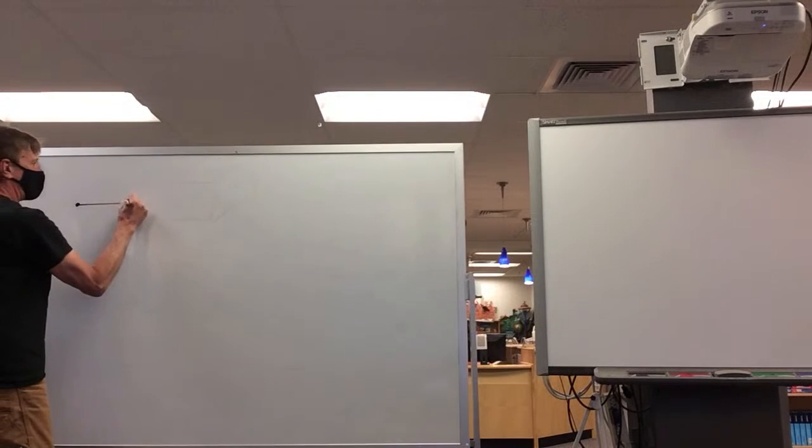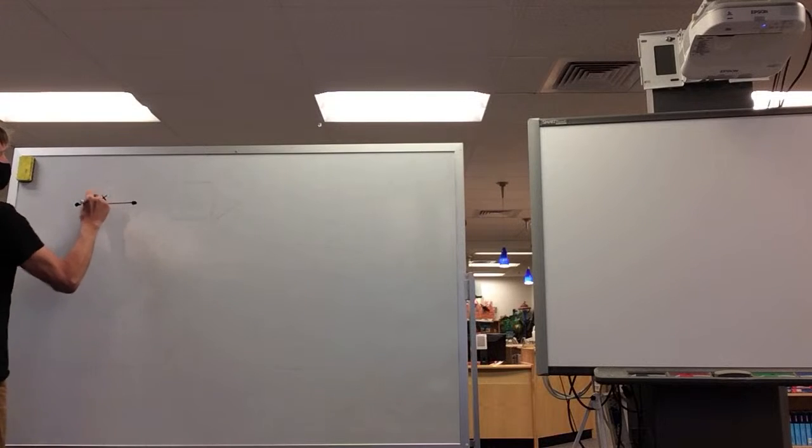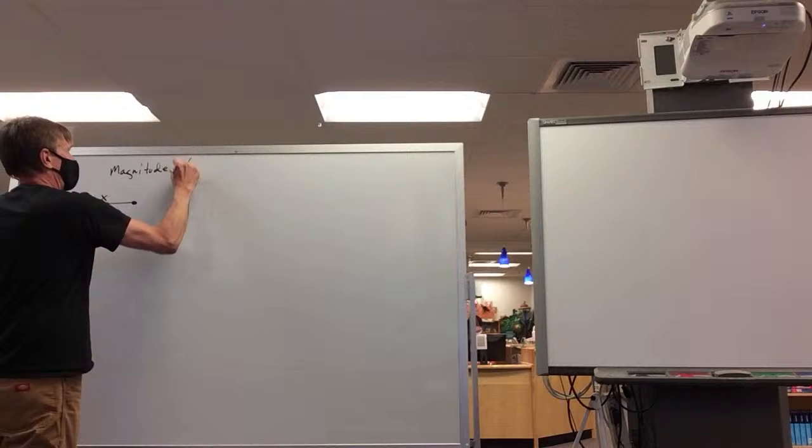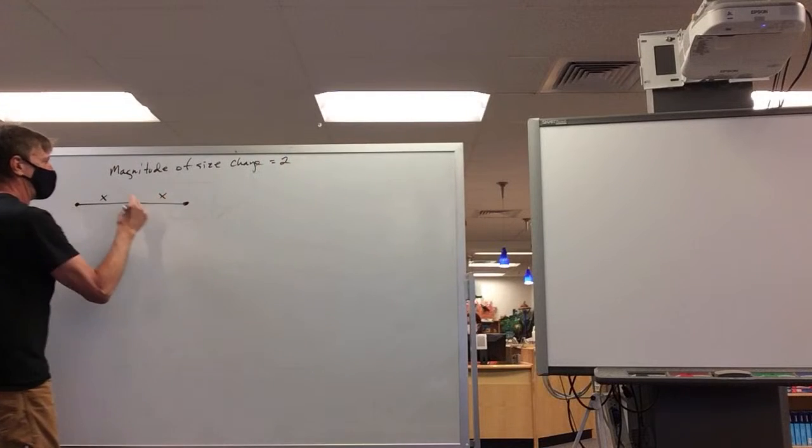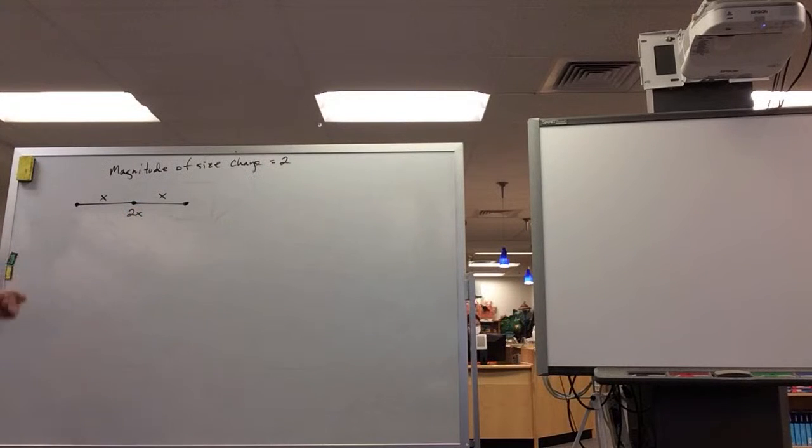If I took a segment that had length x and I double the segment length, it's how long? So if there's a magnitude of size change and that's 2, my new segment is 2x in length. But if I have a square on the board here and it's perfectly flat, it has no depth to it, this would be thought of as area for this square.